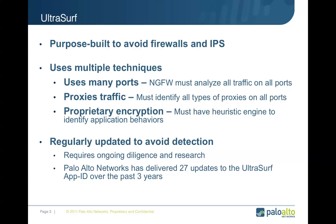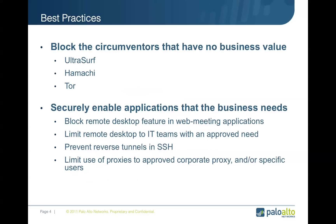These are the types of applications that know how to get past a traditional approach to security. If we don't have these things under control, then all of our best efforts — all of our controls at the perimeter and beyond — are going to be easy for an end user or a hacker to drive past. So how do we fix this? We need to block the worst of the worst applications: things like UltraSurf, Hamachi, and Tor — all those things that can create tunnels into our environment with no business value.